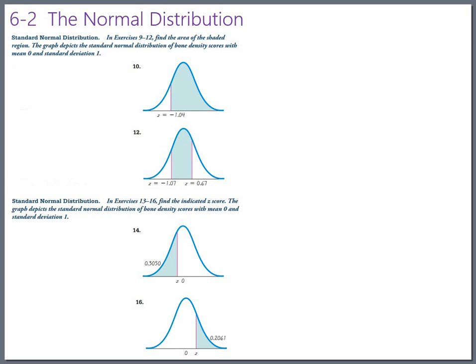So in 6.2, they give you almost all the examples using this bone density score. The bone density scores can be positive or negative, and they have a mean of 0 and a standard deviation of 1, which is kind of nice because that means a bone density score is already a z-score. Think about that just for a second.